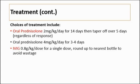Treatment choices include oral prednisolone for 14 days, then tapered off over 5 days regardless of the response. Another option is a higher dose of oral prednisolone — 4 mg instead of 2 mg — given for a shorter duration of 3 to 4 days. A further choice is IVIG (intravenous immunoglobulin), given at 0.8 gram per kg per dose as a single dose, usually rounded up to the nearest bottle to avoid wastage.